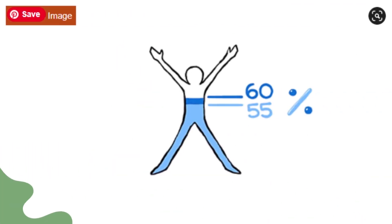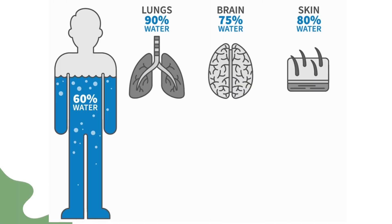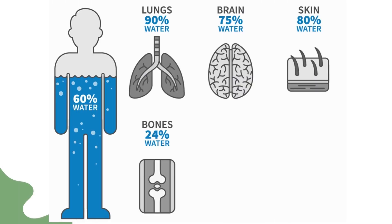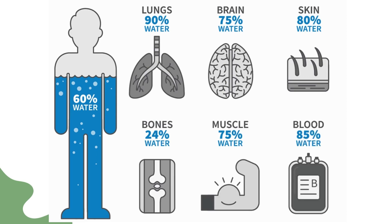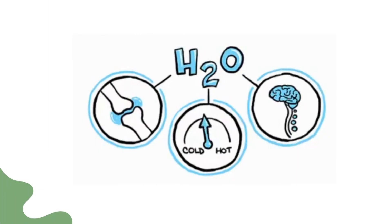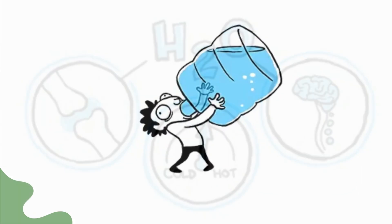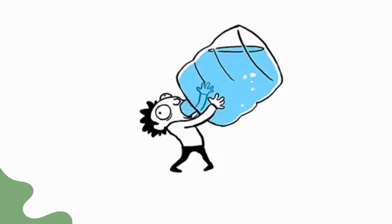The average adult's body weight is roughly 60% water, which is also in charge of numerous physiological functions in the body. As a result, maintaining fluid and electrolyte homeostasis is essential for human survival, as shown by the potentially fatal effects of fluid imbalance.